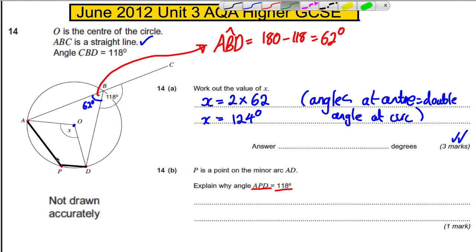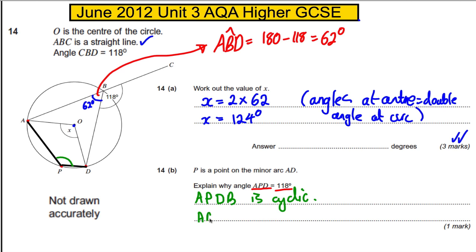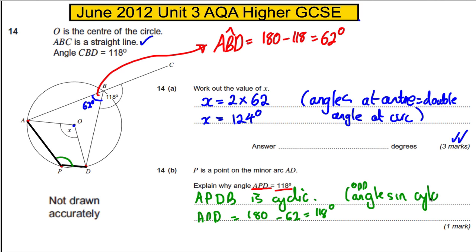We have now formed a cyclic quadrilateral APDB. Because it is a cyclic quadrilateral, opposite angles must add to 180°. Therefore angle APD = 180 − 62 = 118 degrees. State the rule: opposite angles in a cyclic quadrilateral add to 180°.